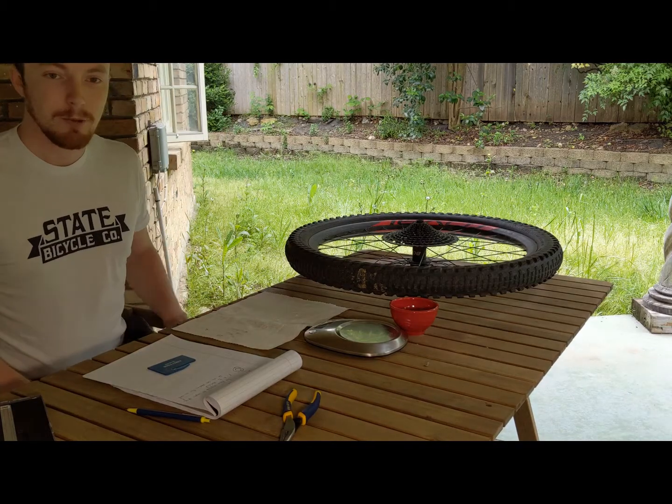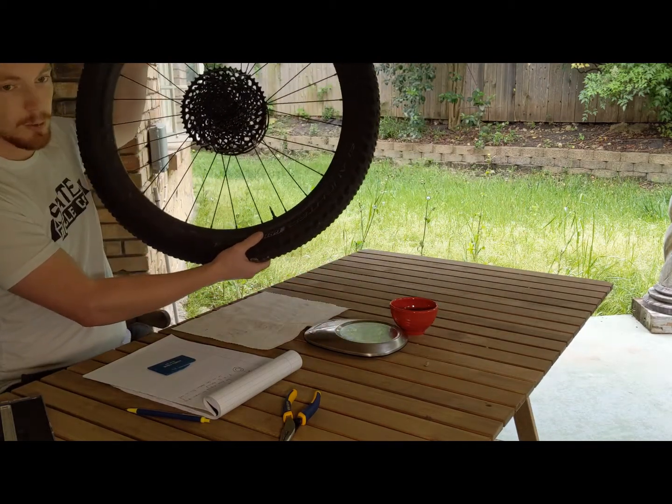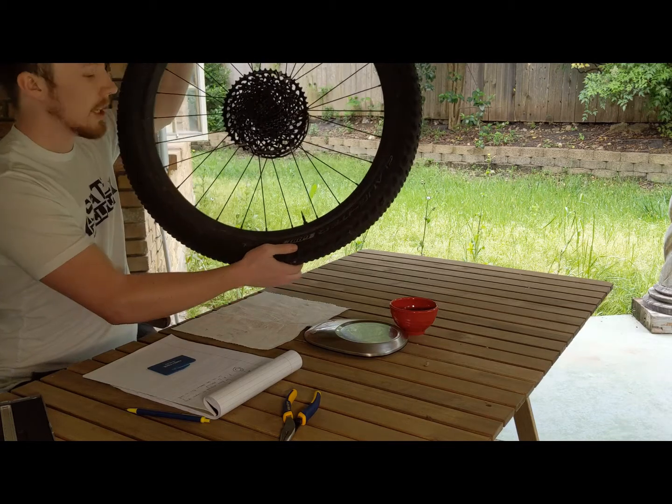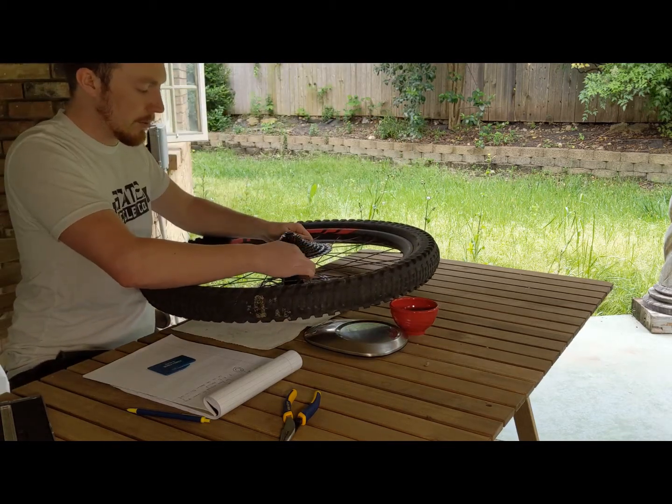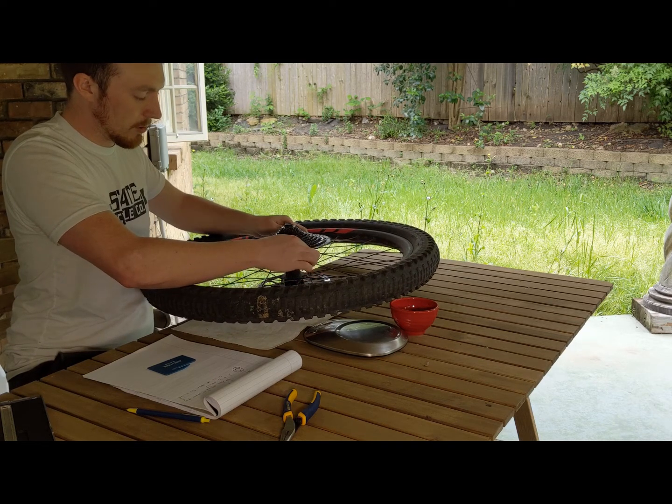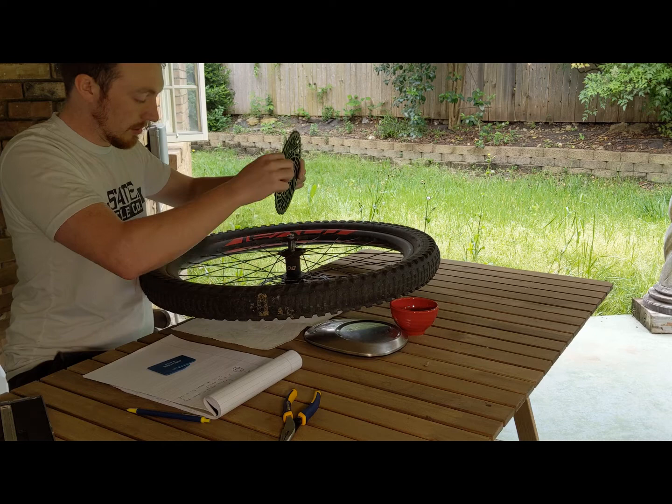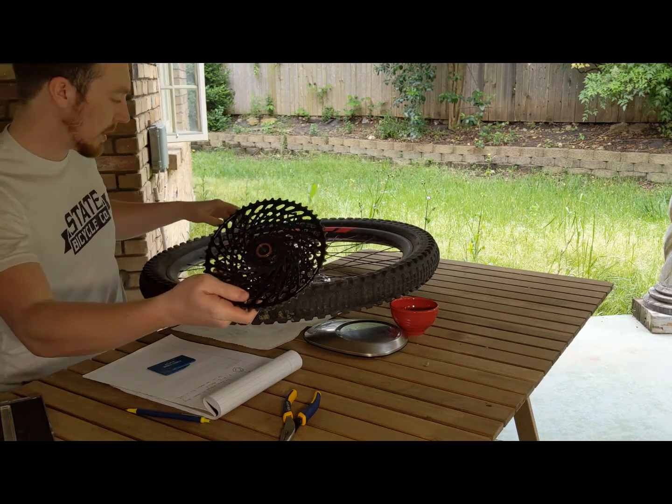So the first thing that we're going to be doing is taking the freehub off the bike. You want to take your wheel off, and then on my bike in particular, you can actually take these off without taking the cassette off. It just pops off, pull very lightly, and make sure that your stuff doesn't go everywhere. You can see the internals right there.